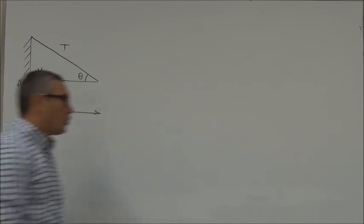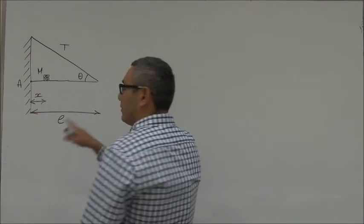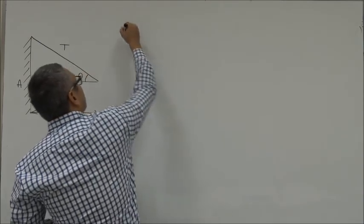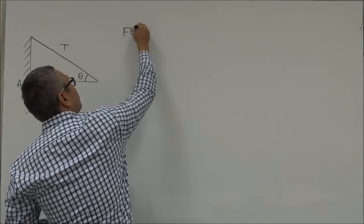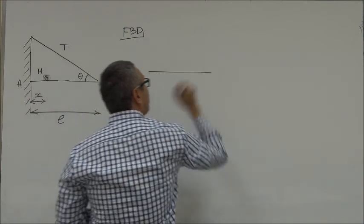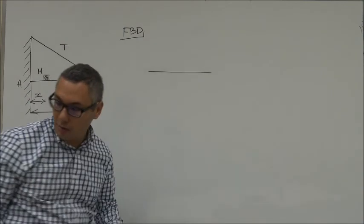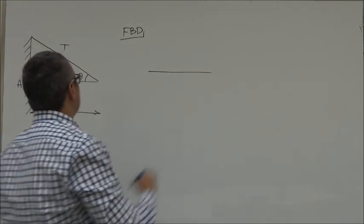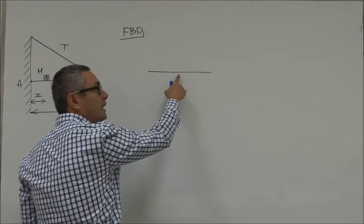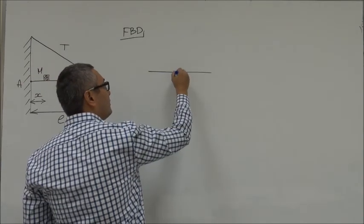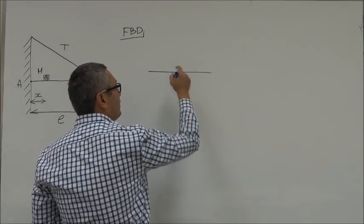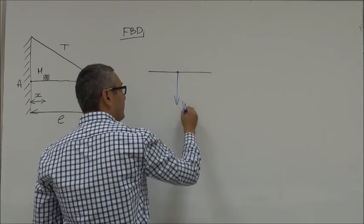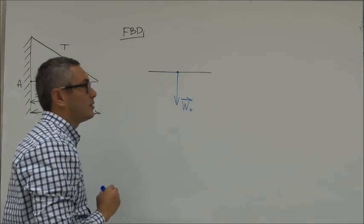Let's start by drawing a free body diagram for the horizontal bar. So the free body diagram looks like this — this is the bar. Now let's draw all the forces. First we have the weight of the bar itself, and because the bar is uniform, the weight acts from the center pointing straight down. Let's call it W-zero.